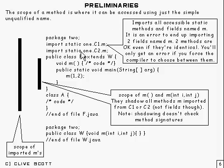Now, there's another static import statement, and it turns out to be an error to end up importing two fields named M. Two methods are OK, though, even if they are identical.